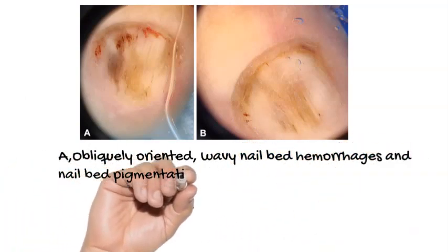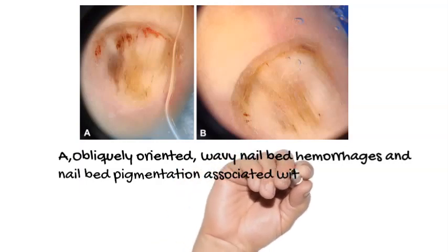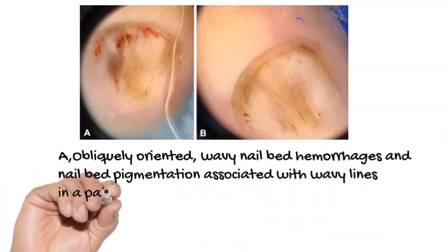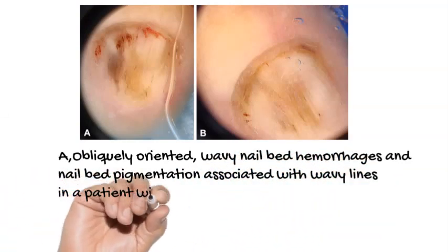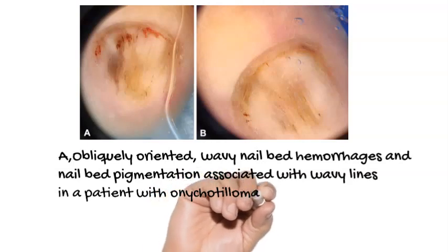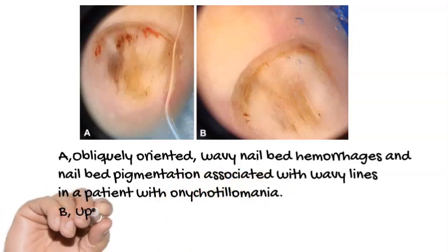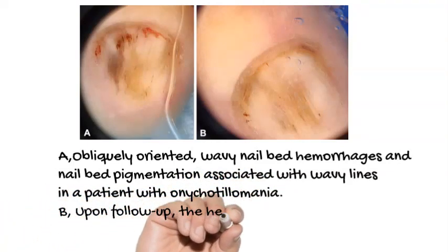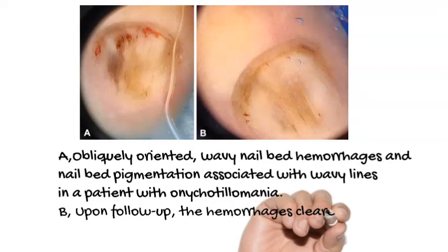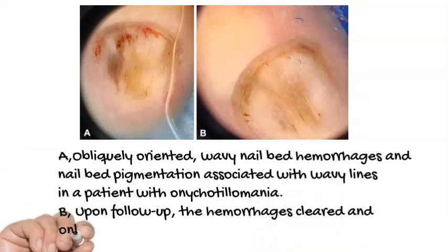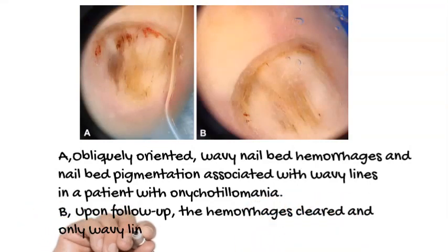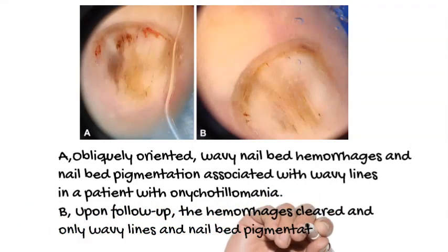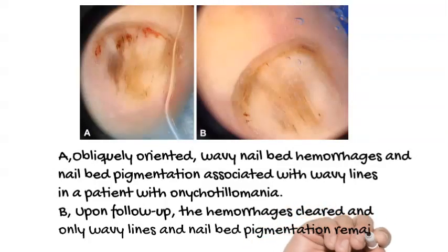Upon follow-up of this patient, the hemorrhages cleared and only the wavy lines and nail bed pigmentation remained. So hemorrhages are the first sign to clear upon follow-up of a patient treated for onychotillomania.